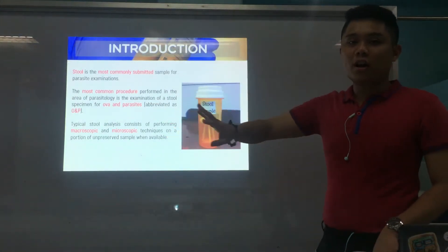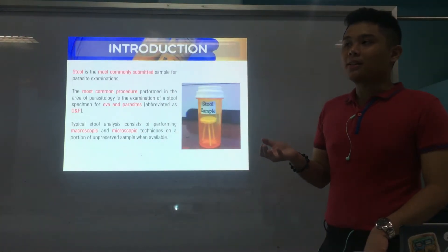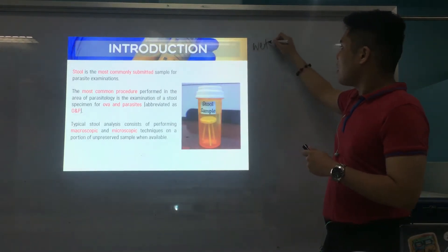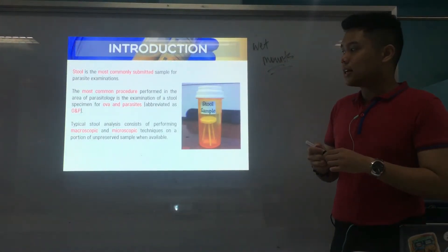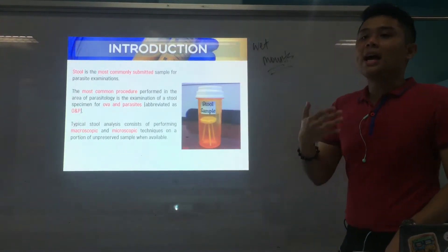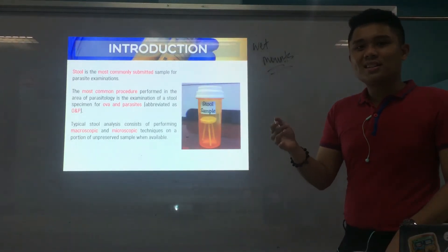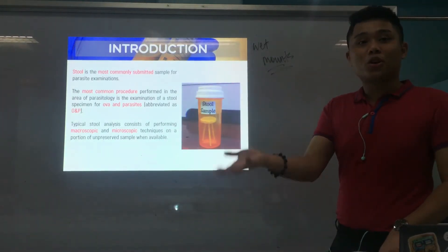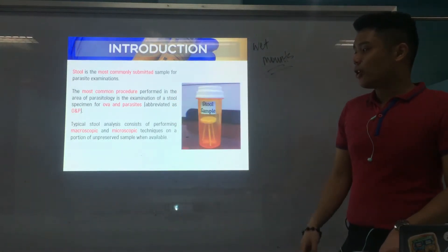Your stool analysis focuses on macroscopic and microscopic examination. The macroscopic portion we will discuss in a separate discussion later on — when we've already discussed how to create wet mounts. When we arrive at that lesson, we will also discuss macroscopic examination of stool: the appearance of the stool, its color, its consistency, and what other things can be seen there, like adult worms or proglottids of tapeworms.